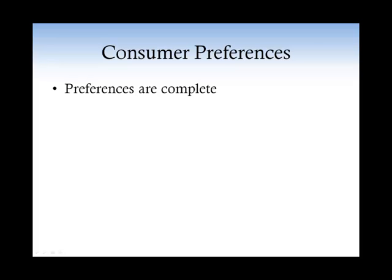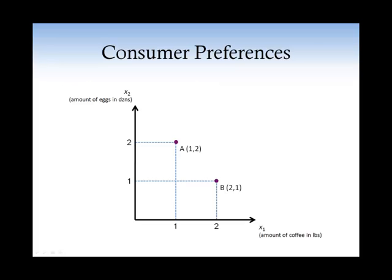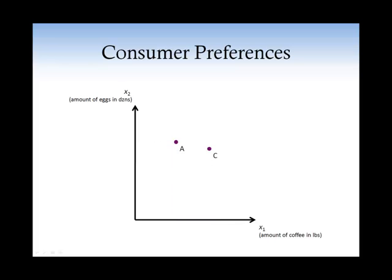So this means that in the example of Mary, if you take two baskets like A and B, Mary knows if she likes A better than B, or if she likes B better than A, or if she likes them the same. And we assume that Mary is able to rank any two baskets — basket A and basket C, basket D and basket E. This is what it means for the preferences to be complete.